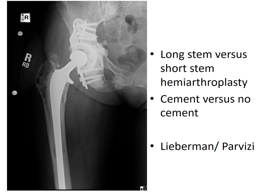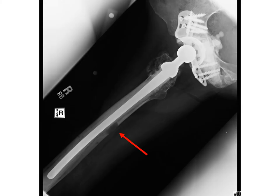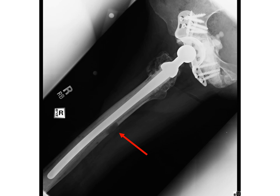Another controversy is using long stem versus short stem hemiarthroplasty and whether to use cement or no cement. In a patient with metastatic breast cancer, a very large cage fixation with a long stem cemented hemiarthroplasty was placed. As she developed disease down the bone with lytic lesions, it was good that the entire femur had been prophylaxed. However, in today's population with better systemic therapy and longer lifespan, long stem cemented hemiarthroplasties create a very large cement bolus and fat emboli with a significant rate of complications.